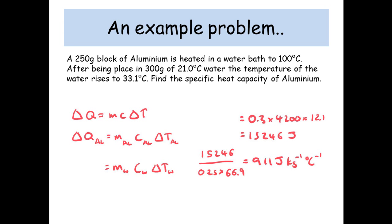And the block went from 100 degrees to 33.1, which is a change of 66.9 degrees. So that's where the 66.9 comes from. And you get a specific heat capacity of 911 joules per kilogram per degree.